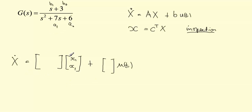So as it is what we're going to do here we're going to have here minus a0, minus a1, and 1 and 0. In this case here we're going to have b0 and b1